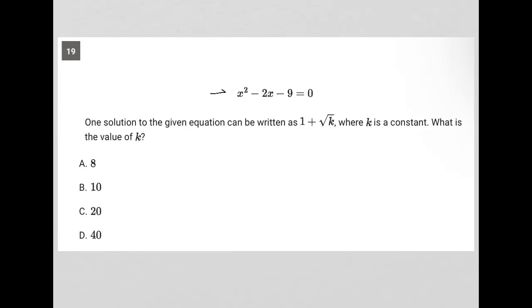This question says x squared minus 2x minus 9 is equal to 0. The question goes on to say one solution to the given equation can be written as 1 plus radical k, where k is a constant. What is the value of k?